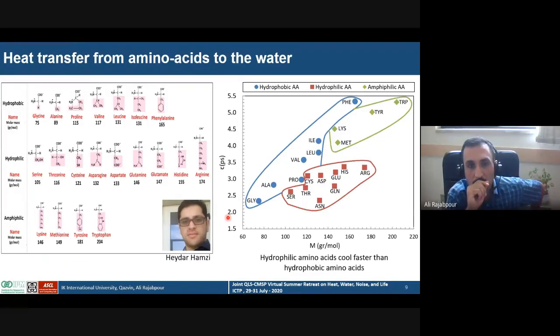Another project is to investigate the cooling of amino acids in water and calculate the relaxation time for different types of hydrophilic and hydrophobic amino acids. We have found that at a given mass, as you see, the hydrophilic amino acids cool faster than the hydrophobic amino acids. We studied the interfacial thermal resistance between different amino acids, 19 amino acids, and water and calculated the distribution of the cooling time of each amino acid.